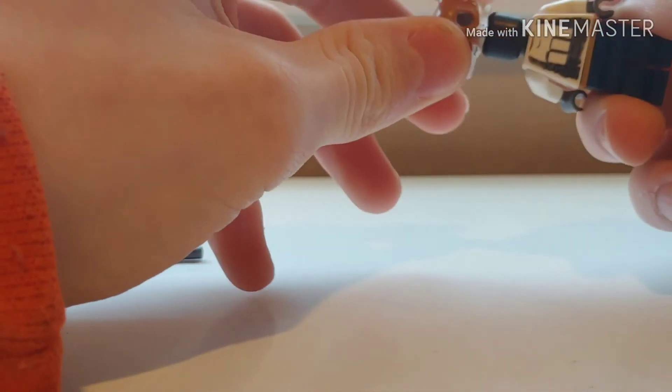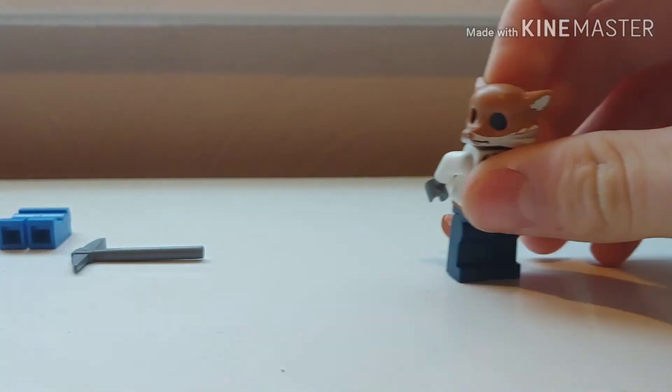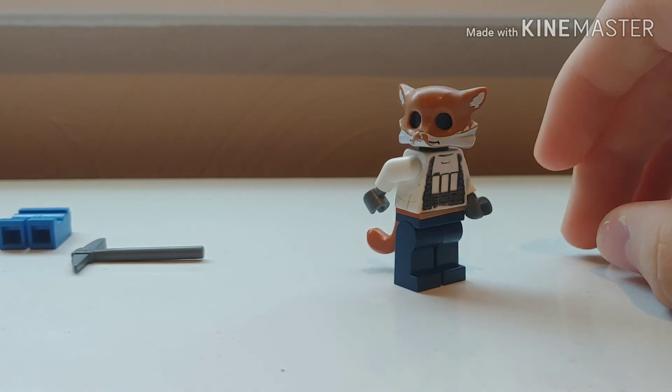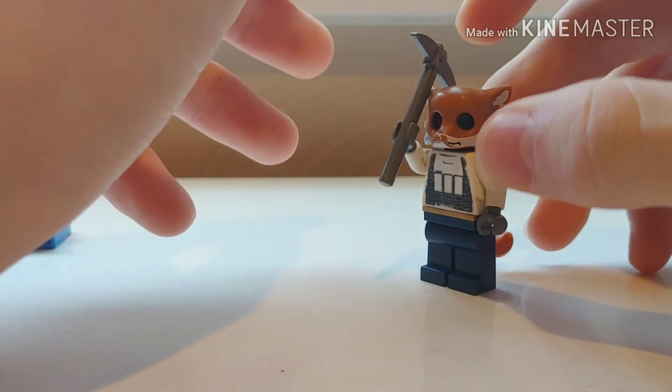The big head piece comes from Worriz from Chima. That's gonna be a harder piece to get, but it works the best for him, no joke. Then the accessory is just a pickaxe.